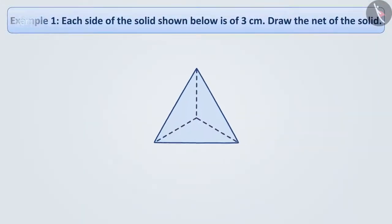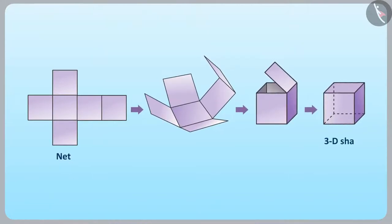Each side of the solid shown below is of 3 cm. Let us draw the net of the solid. Net is a skeleton outline or framework made in 2D which, when folded, results in a 3D shape.